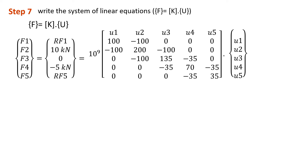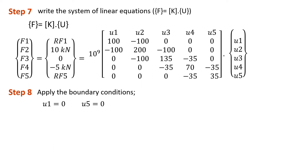The next step is to apply the boundary conditions. Our boundary conditions are U1 equals 0 and U5 equals 0, because the system has fixed joints at both ends — node 1 is fixed and node 5 is also fixed. Each column in the matrix is dedicated to each unknown: column 1 to U1, column 2 to U2, column 3 to U3, column 4 to U4, and column 5 to U5.